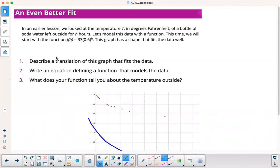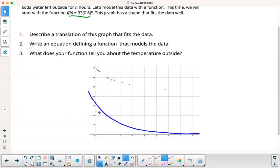In an earlier lesson, we looked at the temperature T in degrees Fahrenheit of a bottle of soda water left outside for h hours. Let's model this data with a function. This time, we're going to start with this function, so that's the blue graph down there below. If you have a book, you probably have two separate graphs. You have the function on the right, and then you have the data on the left. I plotted the data here, and then I put my function on the same graph. So describe a translation of this graph that fits the data.